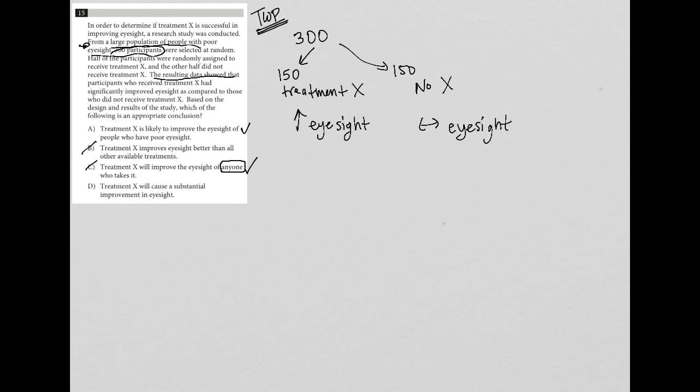Choice D, treatment X will cause a substantial improvement in eyesight. So once again, this term substantial, and it's not even qualified. Improvement in eyesight for who? For anyone, for everyone? We don't really know that. Because all we know is if you have poor eyesight and you take treatment X, you're expecting an improvement. So choice A is the best answer of the bunch here.